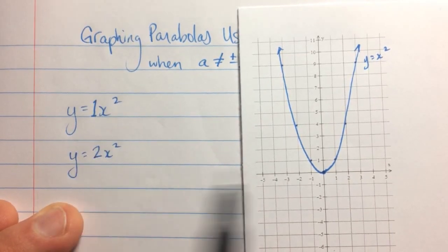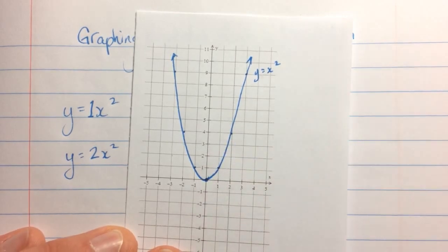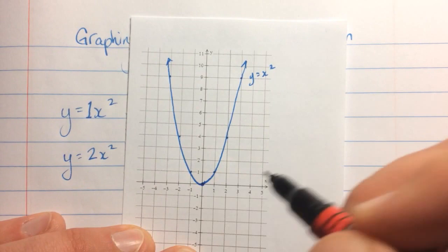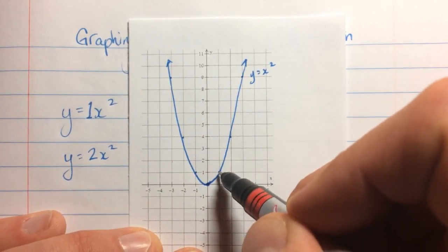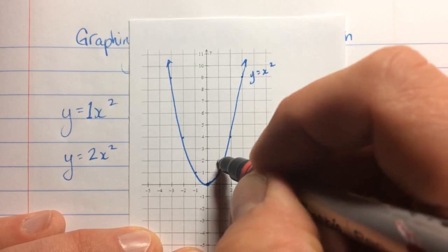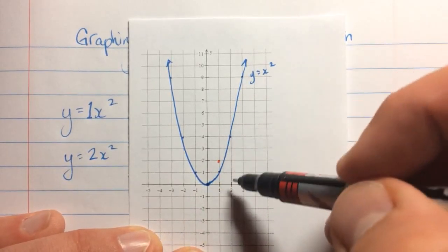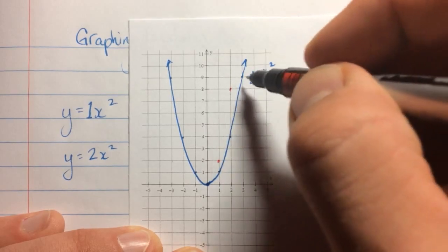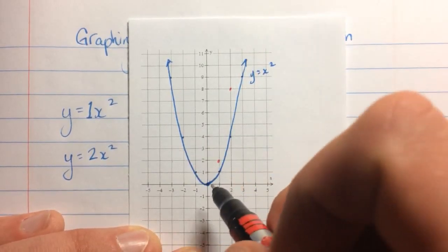When we have a coefficient of 2, every y-value is twice as much as it would be for y equals 1 times x-squared. Now it's twice as much, so every point will be twice as high as it was before. The first point stays at 0, 0 still. The second point, which was at 1, 1, is now twice as much — at 2. This one, which was at 4, is now at 8. And this one, which was at 9, is way up at 18.